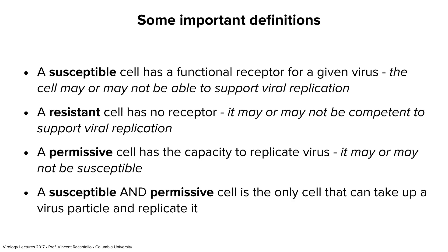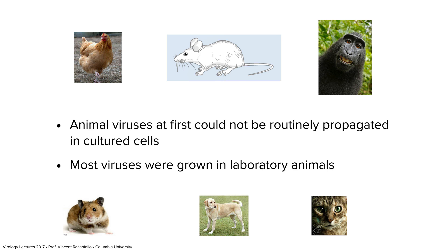A resistant cell has no receptor. It may or may not support virus replication — you can take nucleic acid out of virus particles and put it separately into the cell, which doesn't require a receptor, and sometimes it will replicate. A permissive cell has the capacity to replicate the virus; it has no implications about whether there's a receptor or not. It just means: if the virus could get in and put its nucleic acid in the cell, will it replicate? That's permissivity. A susceptible and permissive cell is the only one that can take up a virus particle and replicate it — meaning it can bind, get in, replicate genomes, assemble, and make new virus particles. Other virologists may use these terms differently, but if you look at the history of virology, these are the correct definitions.